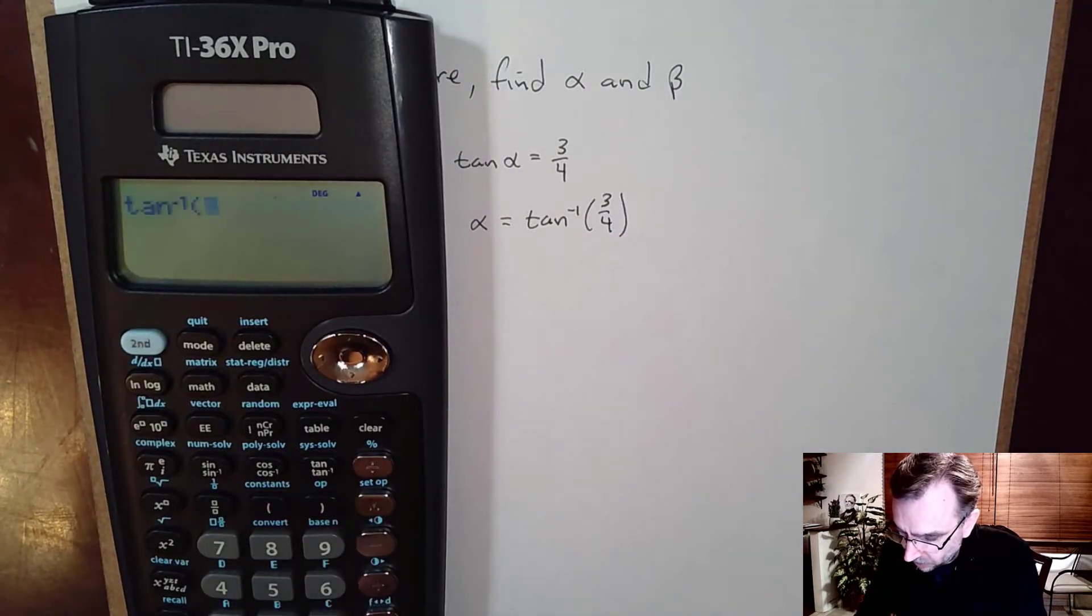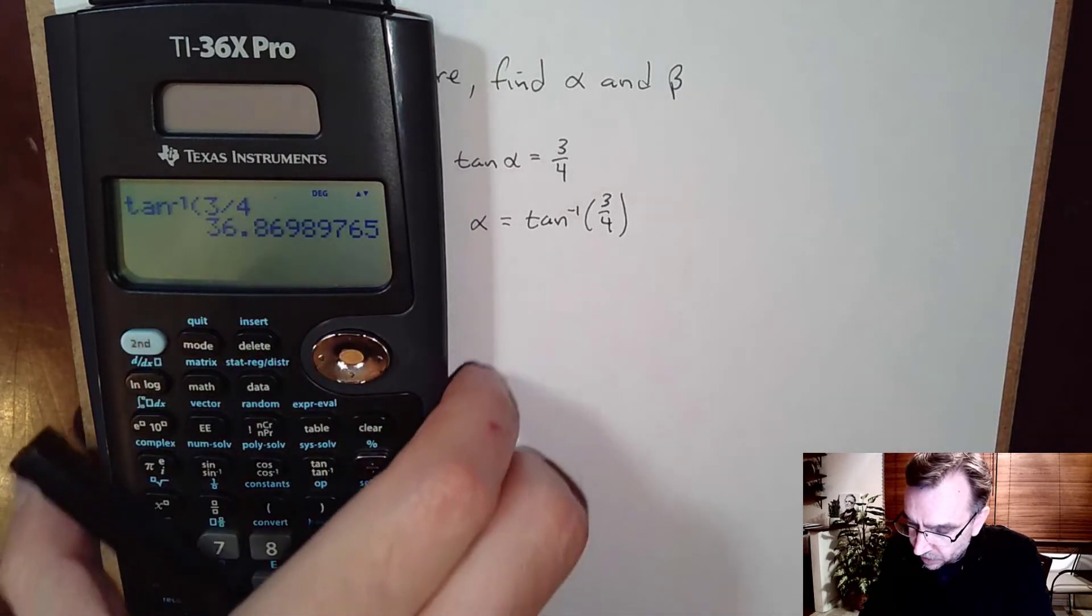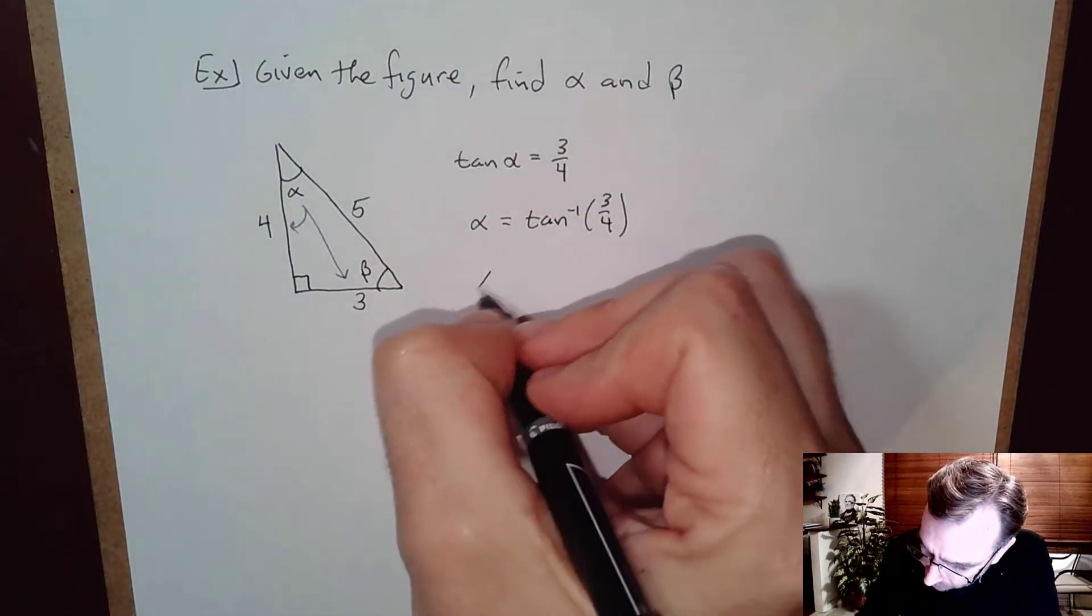Tangent inverse of three-fourths, that comes out to about thirty six point nine degrees approximately.